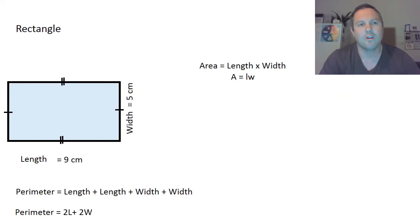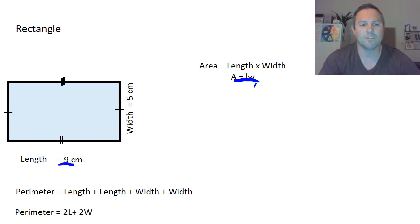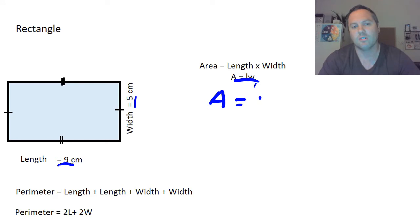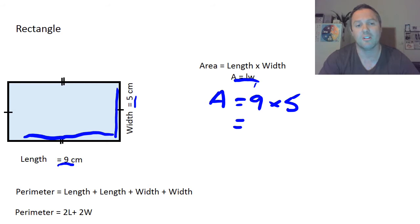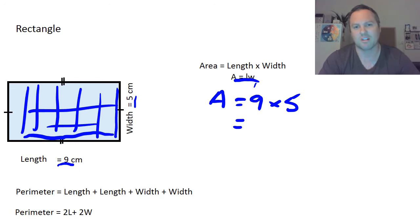Today we're going to look at areas of different shapes. The first one is a rectangle — nice and simple. The rule is area equals length times width. Our length is nine centimeters and our width is five centimeters, so we substitute: A = 9 × 5. That gives you 45 squares in that area — 45 centimeters squared.